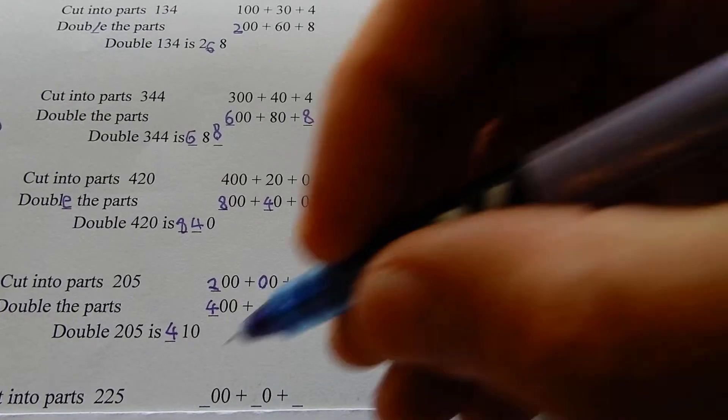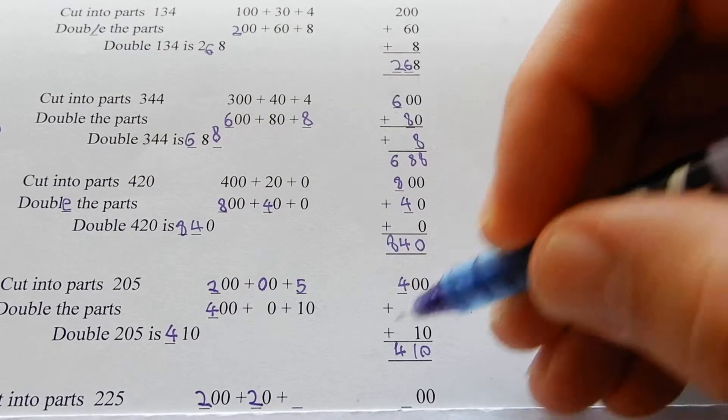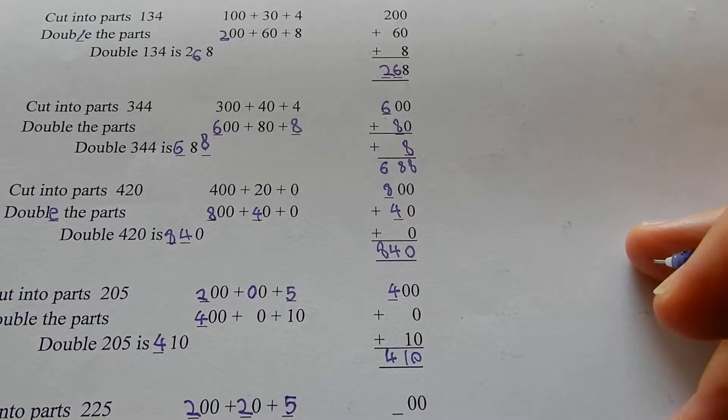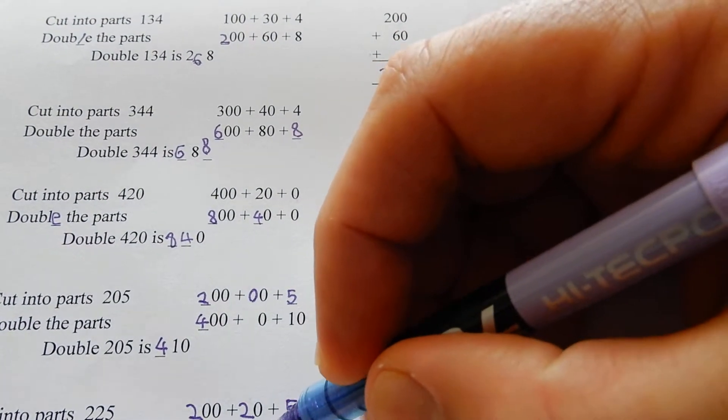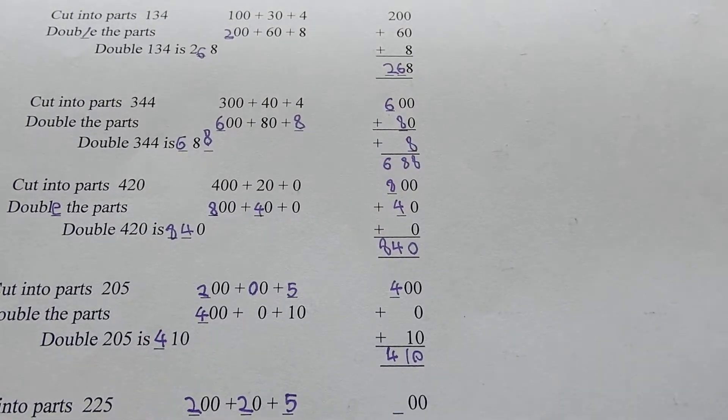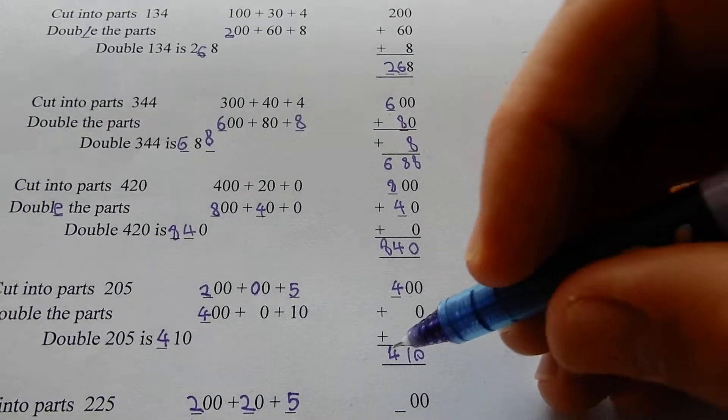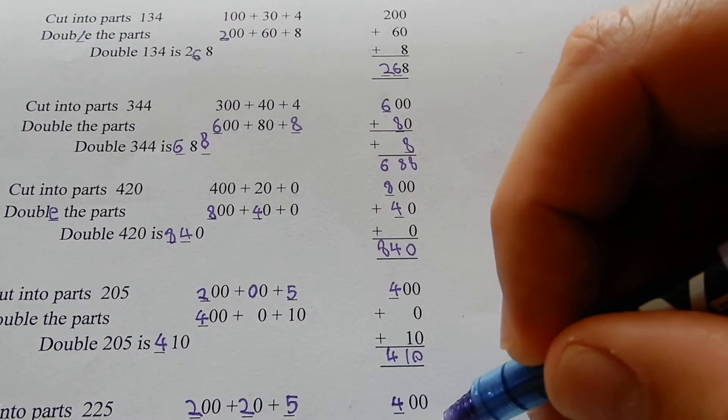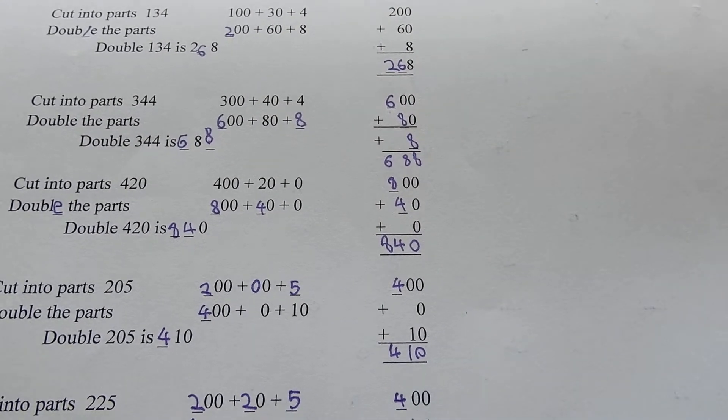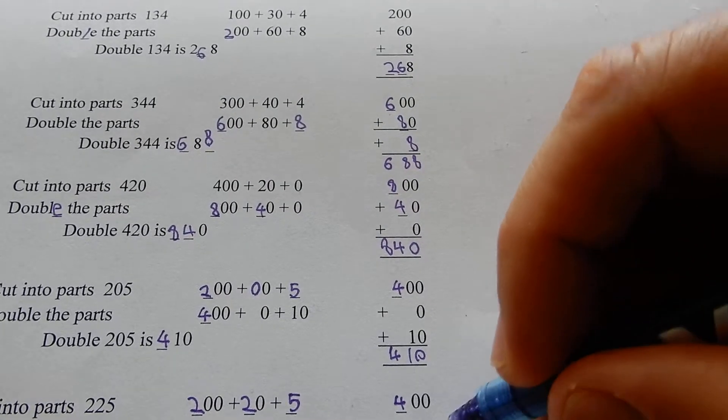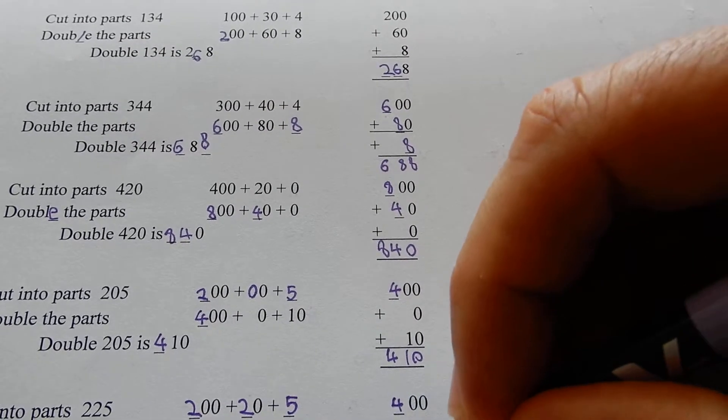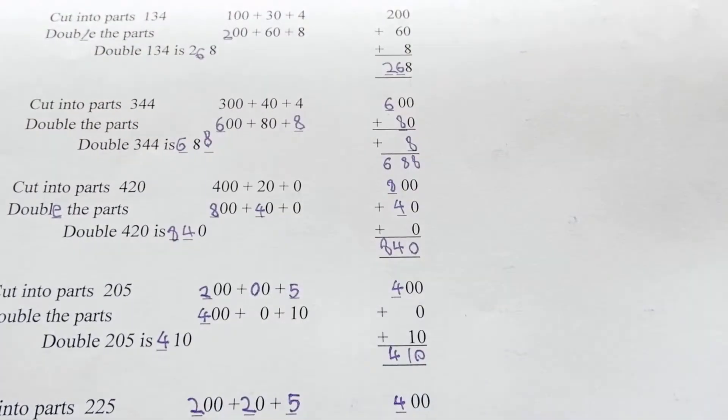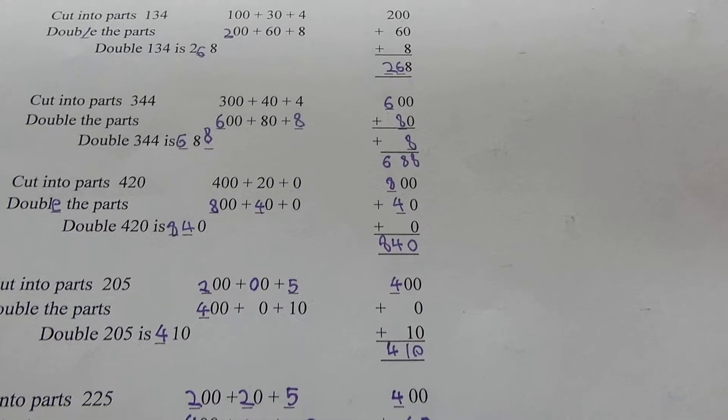Cut it into pieces. 225 is 200 plus 20 plus 5. Double each part: double 200 is 400, double 20 is 40, double 5 is 10. Now you see why you have to cut it into parts first. Add those together: 400 plus 40 plus 10. 0 plus 4 plus 1, 4 plus 1 is 5. 450. Double 225 is 450. After a while you get to remember them.